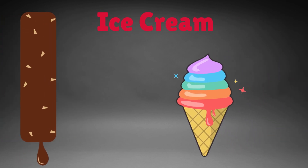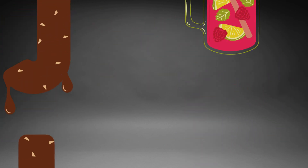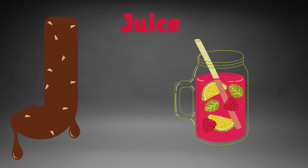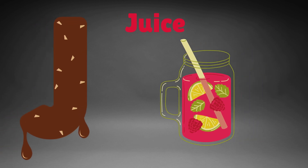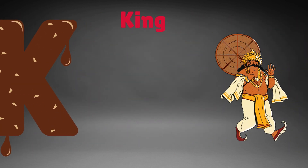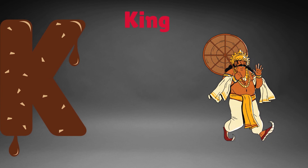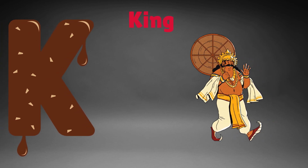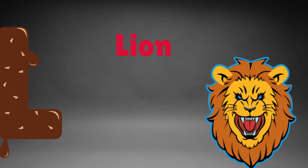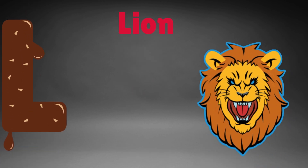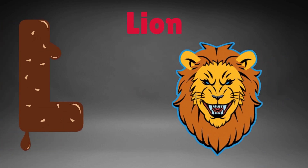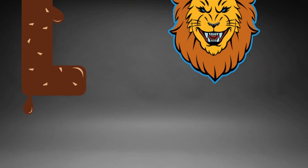I is for ice cream, i-i-ice cream. J is for juice, j-j-juice. K is for king, k-k-king. L is for lion, l-l-lion.